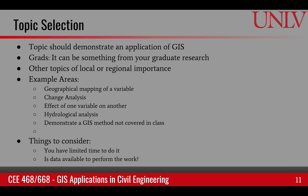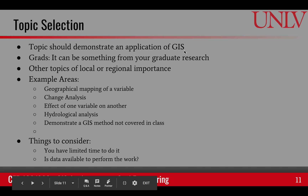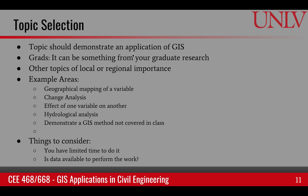Here are some methods you can use to select a topic. Your topic should demonstrate an application of GIS. If you choose something related to your thesis or dissertation, don't make it something where GIS is just touched upon — make sure GIS is central. For grads, it can be from graduate work; for undergrads, it can be from other GIS applications learned through class and labs. You can pick topics that are local, regional, or even of global importance.